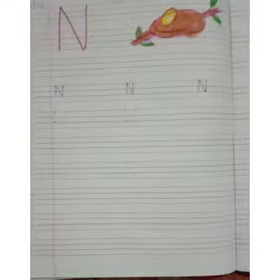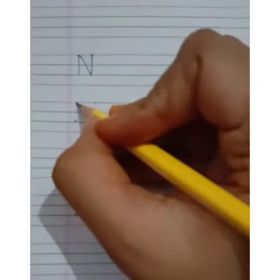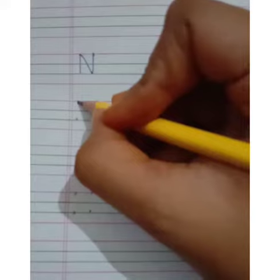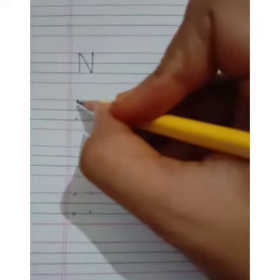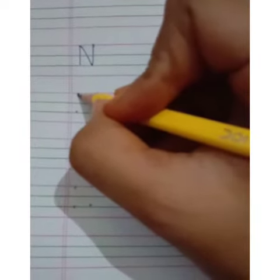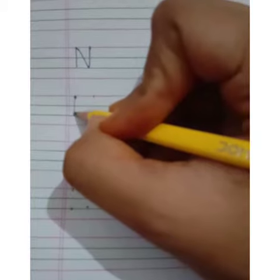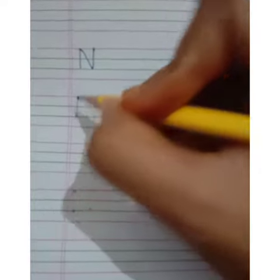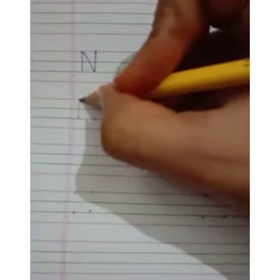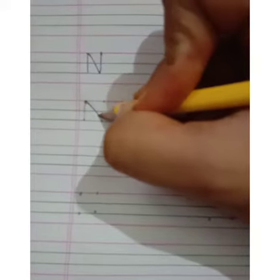Now we will write N. Put your pencil here. Make a standing line starting from the first line going to the third line. Now go back to the top. Make a slanting line starting from the first line going to the third line.